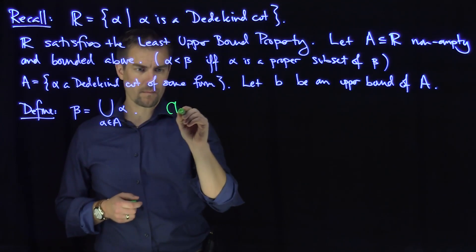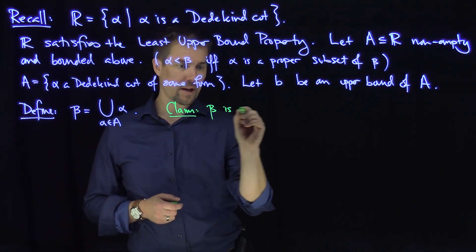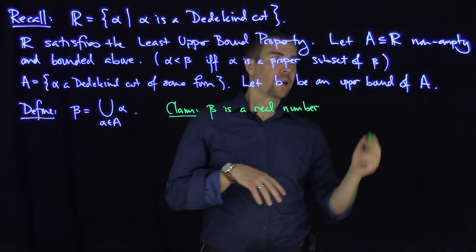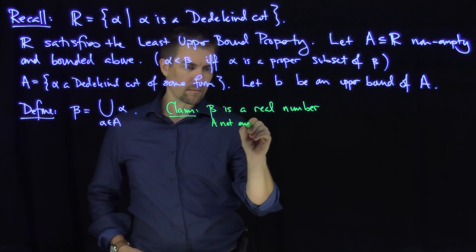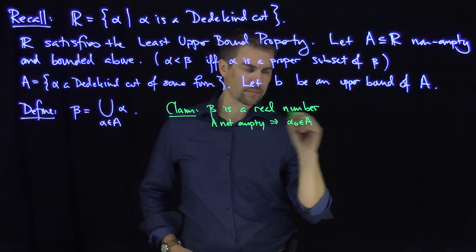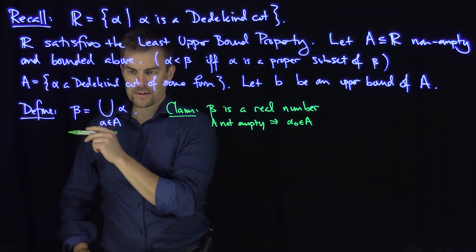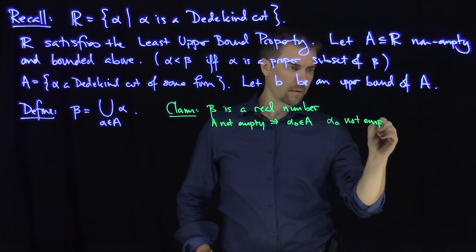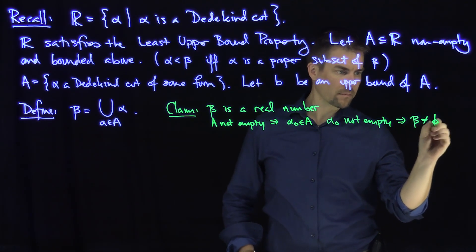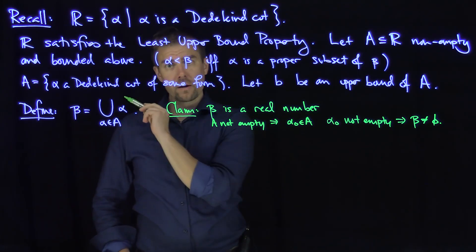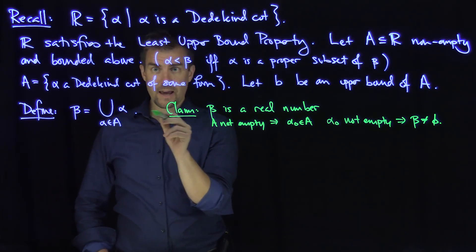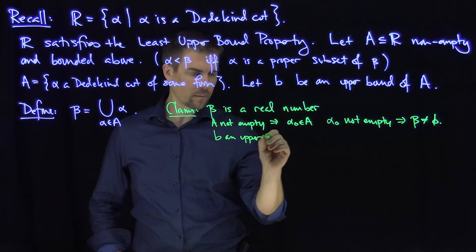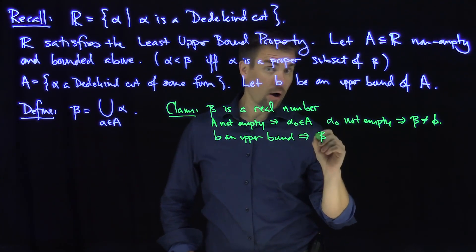I claim that this beta is a Dedekind cut — so claim: beta is a real number. We know that A is not empty, so A not empty implies that there's an alpha-zero in A. That means that everything in alpha-zero is in beta, and alpha-zero is not empty, so beta is not empty. Likewise, since B is an upper bound, there's something that's not in B, so beta is not all of Q.